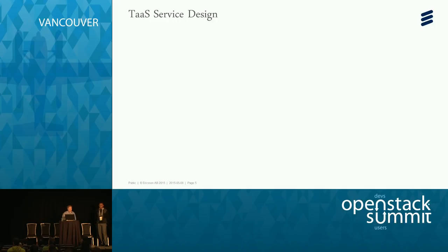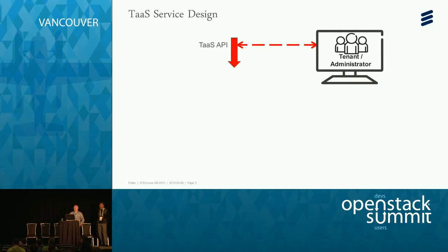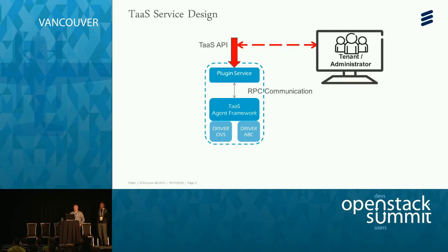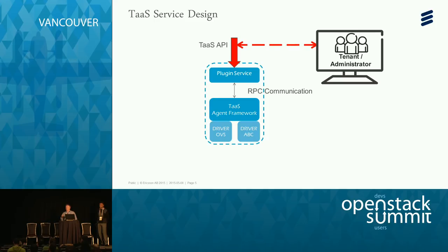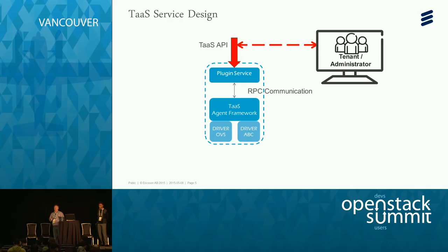The design is simple. A tenant or administrator calls the API, which calls the plug-in service we built. Below the plug-in, using RPC, we have the agent framework with specific drivers. The first driver we're contributing is the OVS driver — OVS already supports port mirroring, so this plug-in simply enables configuration to turn on port mirroring for a specific VM port. Future drivers — for Arista, Extreme, Plumgrid, or Cisco switches — can be written to enable port mirroring further up the stack.